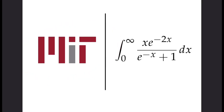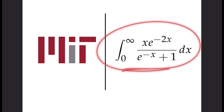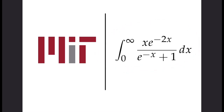MIT's Integration Bee is one of, if not the most challenging, undergraduate math competition in the world. This is question two from the first semi-final this year. Students had only four minutes to complete this, which is absolutely mind-blowing. Let's have a look at how they do it.